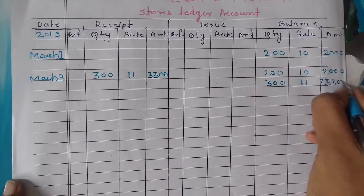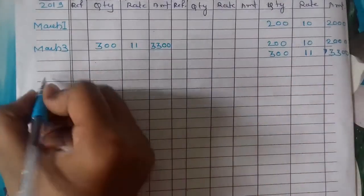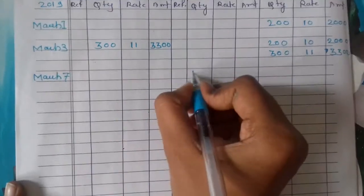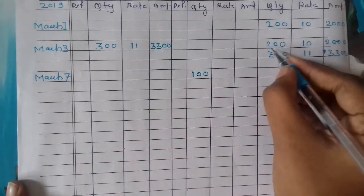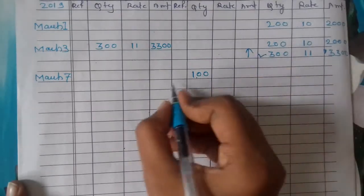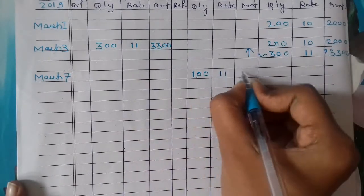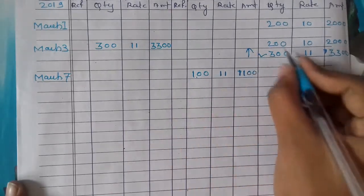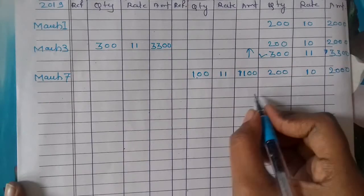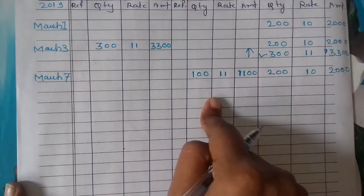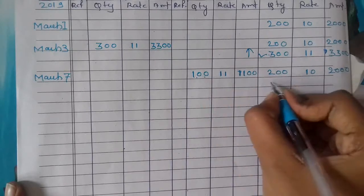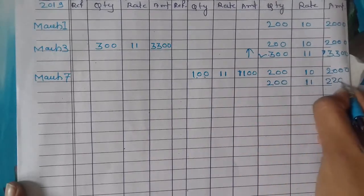Next transaction, March 7 issues 100 units. This method is LIFO - Last In, First Out. So from 300 units at rate 11, we issue 100 units for 1100. Look at the balance: the sequence remains the same in this position, but when we issue, the sequence changes. We used 100 units, so 200 units remain at rate 11, amount 2200.